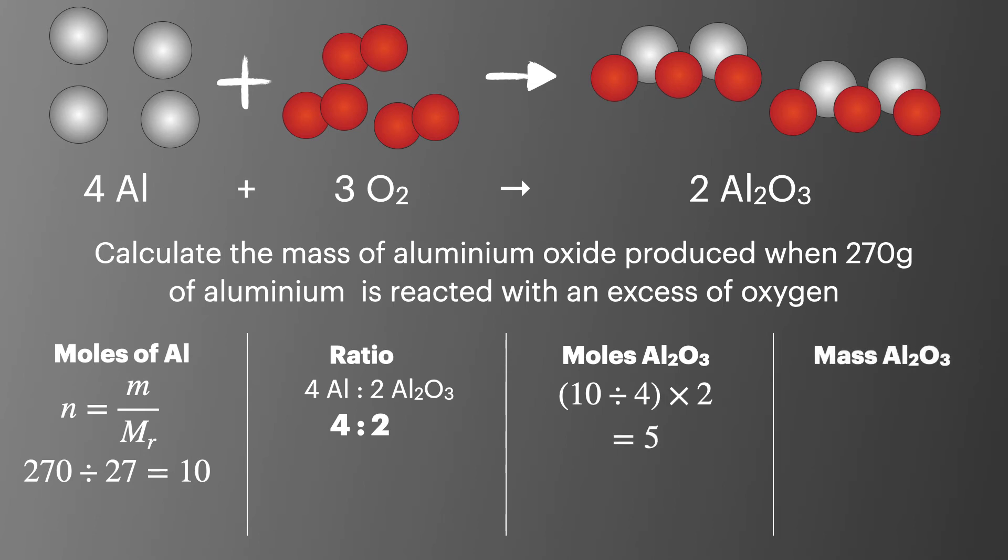In the final step, we'll convert the number of moles to the mass of aluminum oxide. To do this, we'll multiply the number of moles by the Mr of aluminum oxide, which gives us 510 grams.